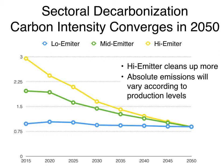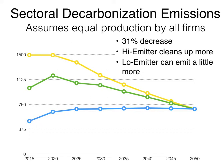These are carbon intensities — carbon emissions divided by some measure of production, in this case tons of steel produced. Here are the same three firms with the same assumptions, but now we're looking at absolute carbon emissions in metric tons CO2e. Depending on how much a company has cleaned up — their starting point in terms of carbon intensity — the SDA method may actually allow a company to increase its emissions. That's like the blue line, the low emitter.